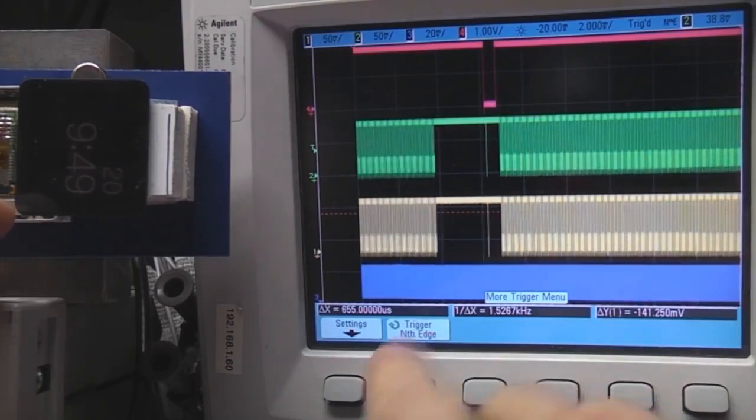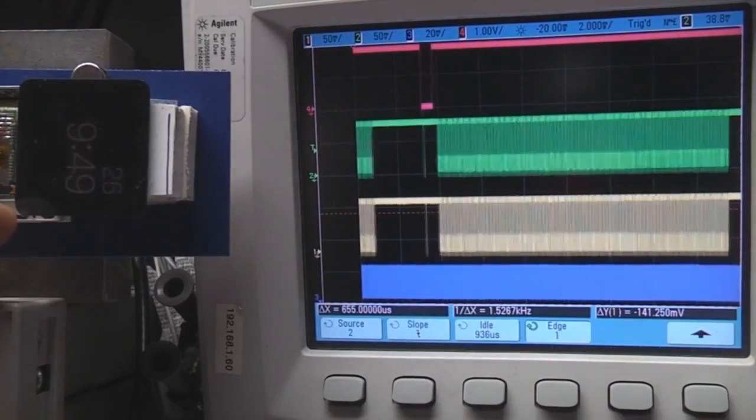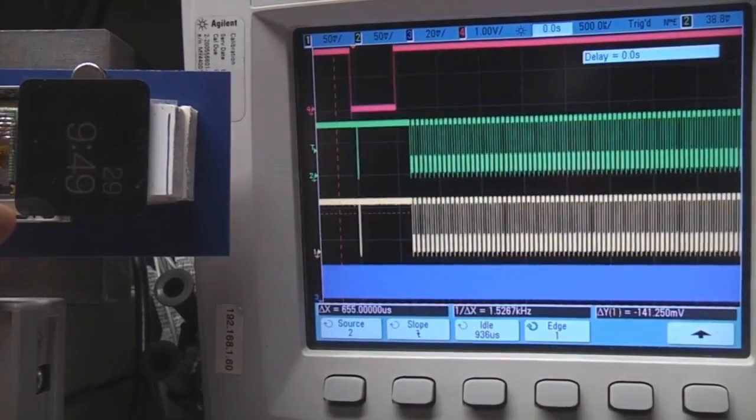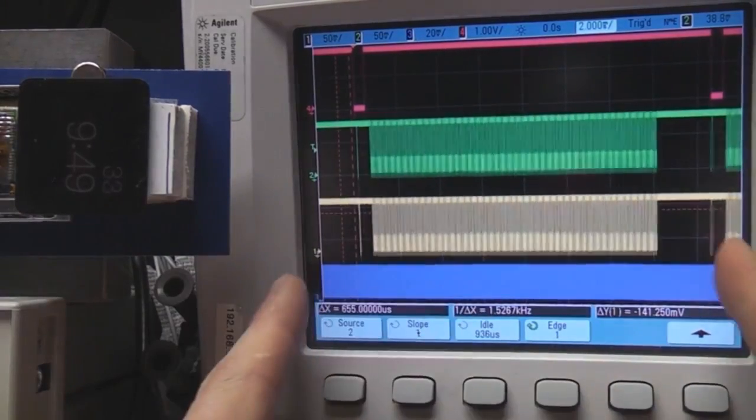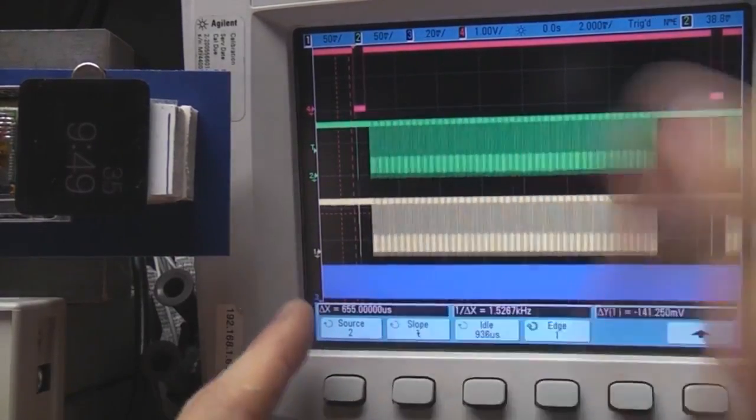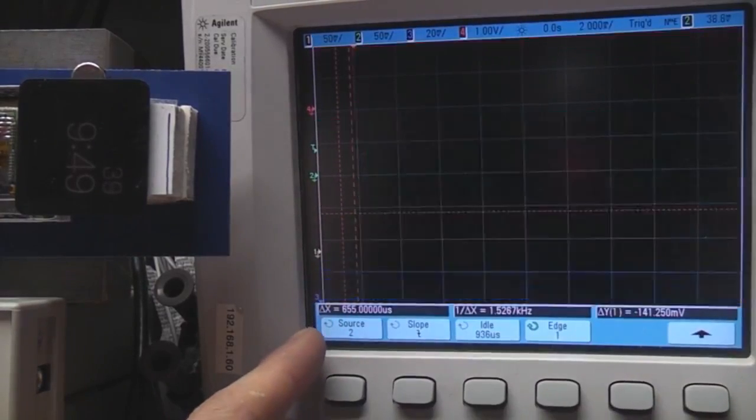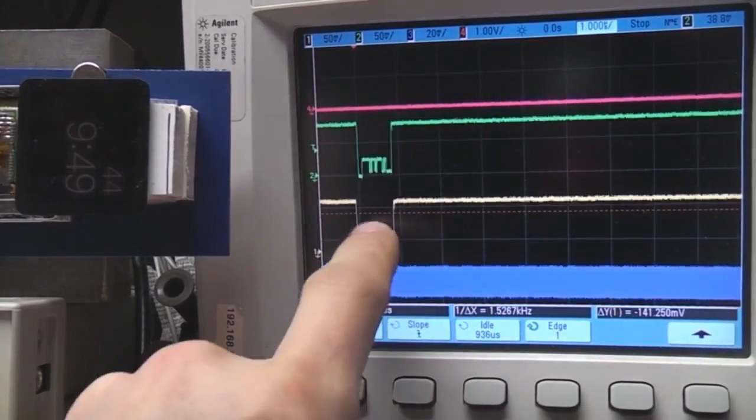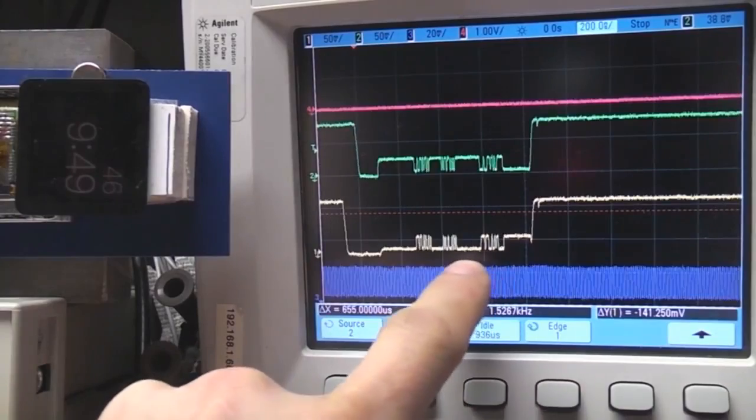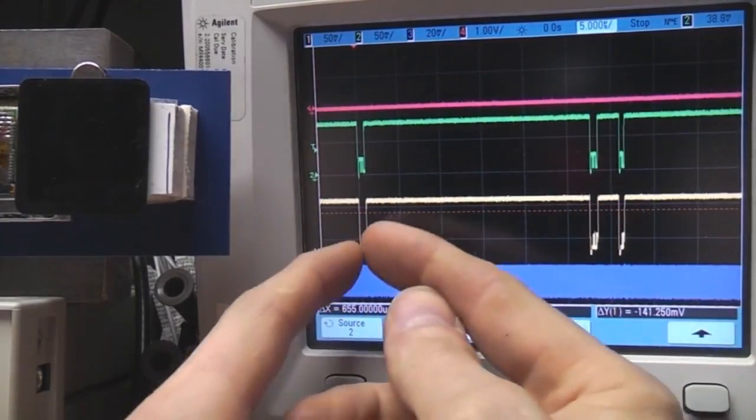The other thing I want to look at is segmented memory - that's something which you don't often see explained very well. What segmented memory does: normally when the scope triggers, it just fills its memory once and then either does it repetitively like this or you do a single trace and it stops. That's fine in a lot of cases, but where you've got situations like this with a lot of fine detail with quite big gaps in it, if you want to look in detail about what's going on in each of these pulses, you're actually wasting a lot of your available memory in these gaps.